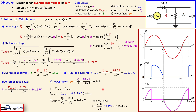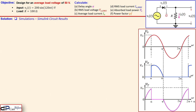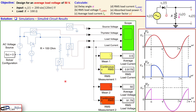Now let's go to the simulation results and check our calculations. The circuit in Simulink includes the AC voltage source of 200·sin(120π·t), the thyristor, a gating signal, the 100 ohm resistor, voltmeters, and current meters. There is also a scope to display the waveforms, which will be presented shortly.